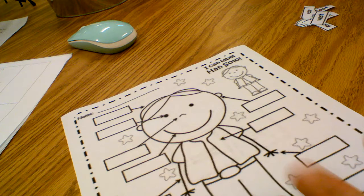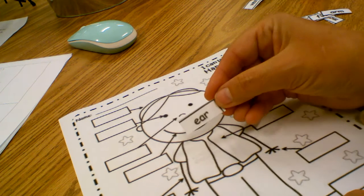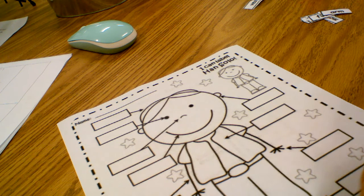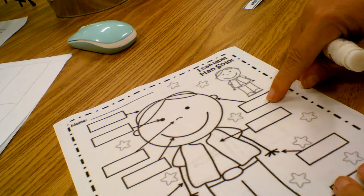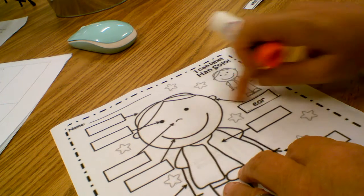Alright, so I've already cut out my pieces here. So this first one, it says ear. So we need to find the box that's pointing to the ear. And that is this one right here. Okay, so ear, right here.